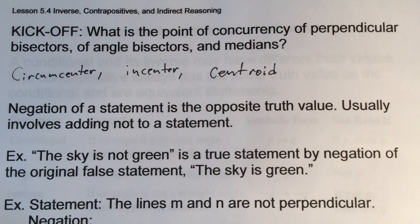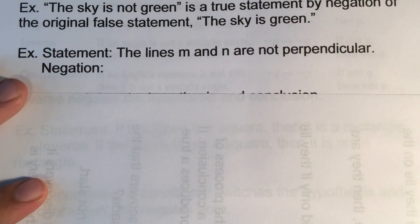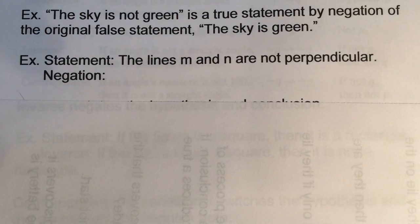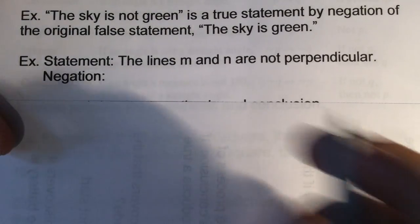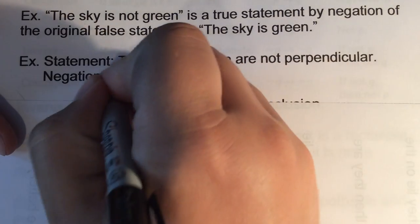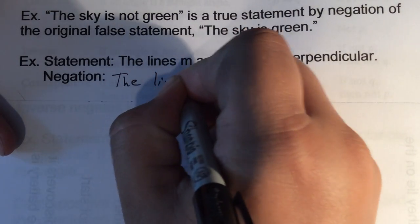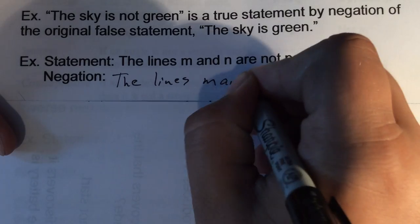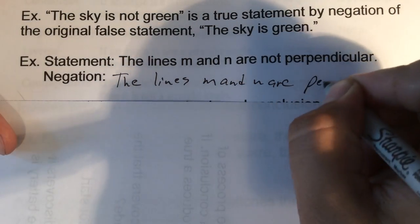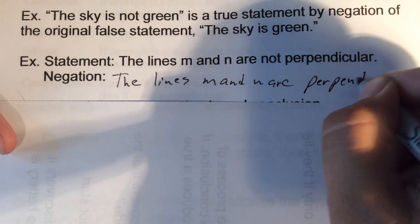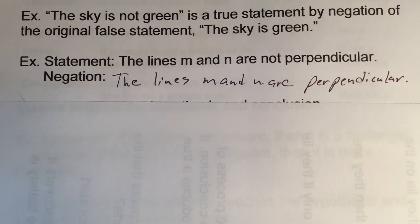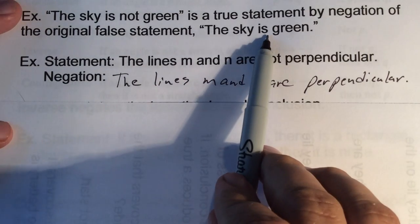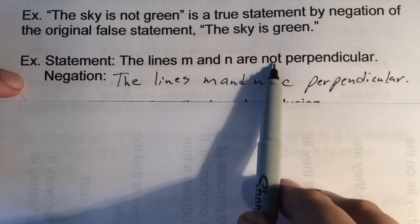Negation can involve putting a 'not' in or taking a 'not' out. For example, the statement 'lines M and N are not perpendicular' — to negate it, we take the 'not' out and say 'lines M and N are perpendicular.' So we can negate by inserting or removing 'not.'